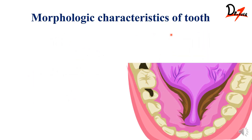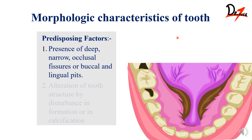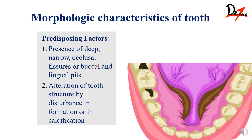The first morphological factor is the presence of deep narrow occlusal fissures. Molars are mainly affected — deep fissures, buccal pits, and lingual pits all predispose to caries. Also, any disturbance in tooth formation during development, like amelogenesis imperfecta or dentinogenesis imperfecta, can affect the morphology of the tooth and further predispose to dental caries.